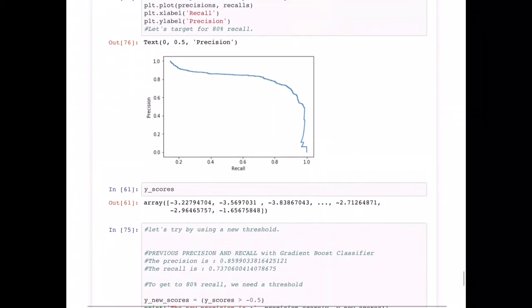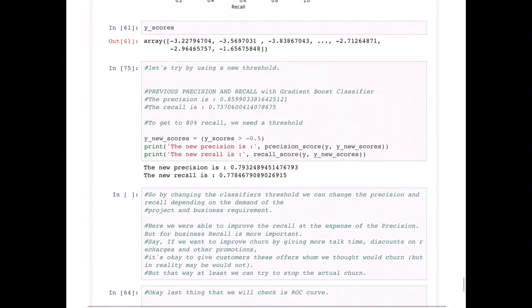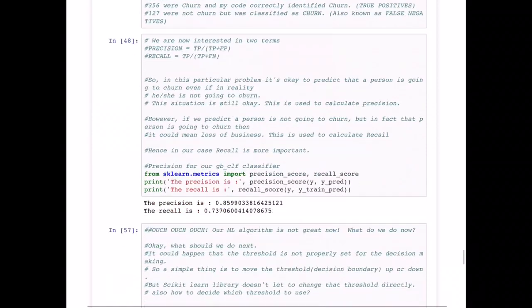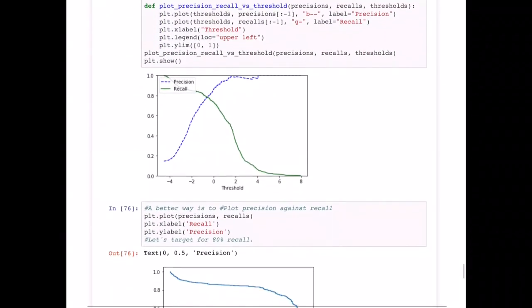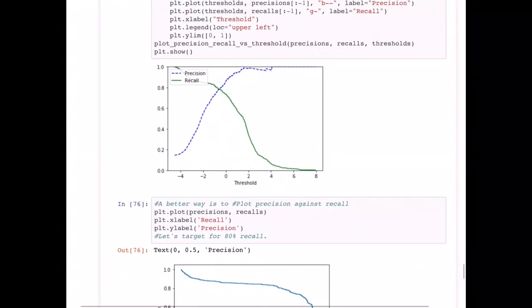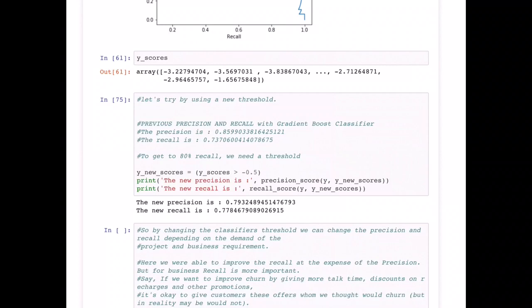Now that we have calculated the thresholds, I am changing my threshold to minus 0.5 because that is what I got from the first graph here. Roughly around at minus 0.5 I got around 80 percent of recall. Based on that, I can update my scores and calculate my new precision and recall. Now my new recall has improved by around 4 or 5 percent. I can keep changing this threshold and keep getting a different precision and recall.